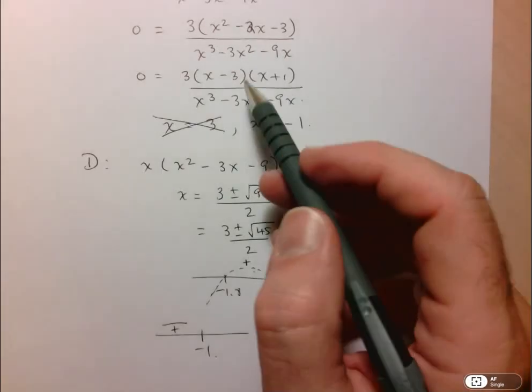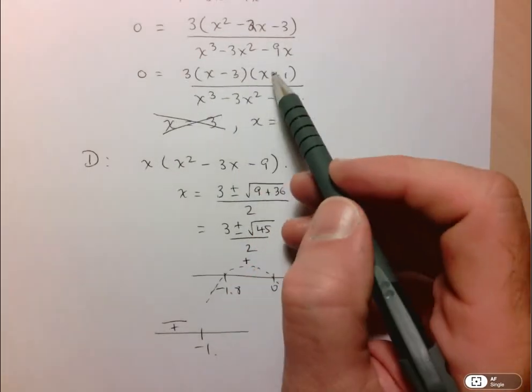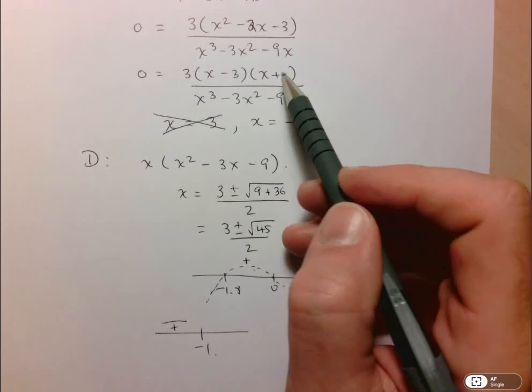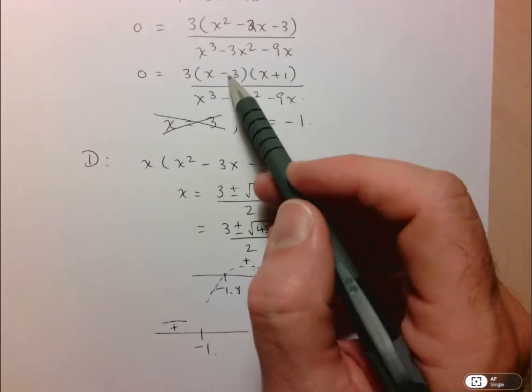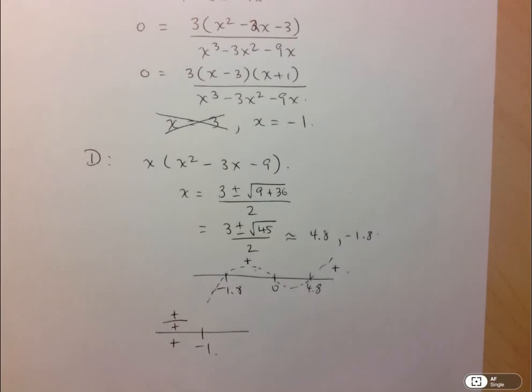If I put in negative 1.5, I get a negative number here. And I also get a negative number here. Negative 1.5 plus 1 is still negative. So negative times negative is positive. So I end up getting positive to the left.